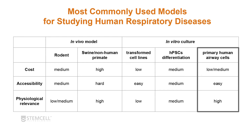The most commonly used models for studying human respiratory diseases are either in vivo or in vitro culture models. This chart compares different model types on costs, accessibility, and physiological relevance. In vivo models include rodent, swine, and non-human primate models. The cost of these is relatively high, accessibility is medium to hard, and physiological relevance varies — low for rodents, but higher for non-human primates, though cost remains high.